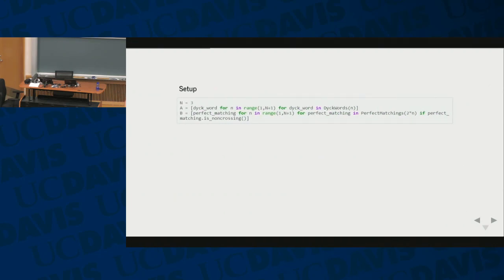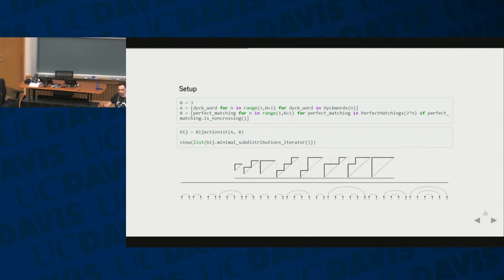So let's first set up Sage. We construct these sets A and B. And we set up bijectionist with our two sets, bijectionist A, B. And we can look at all the possible bijections. There are eight elements. We get eight factorial many permutations, so this is far too many to print. But we have a nice way to output, which we call minimal sub-distribution. So what the bijectionist is trying to do, it will find partitions of A, it will find partitions of B, and it will tell you which blocks you need to map from A to B.